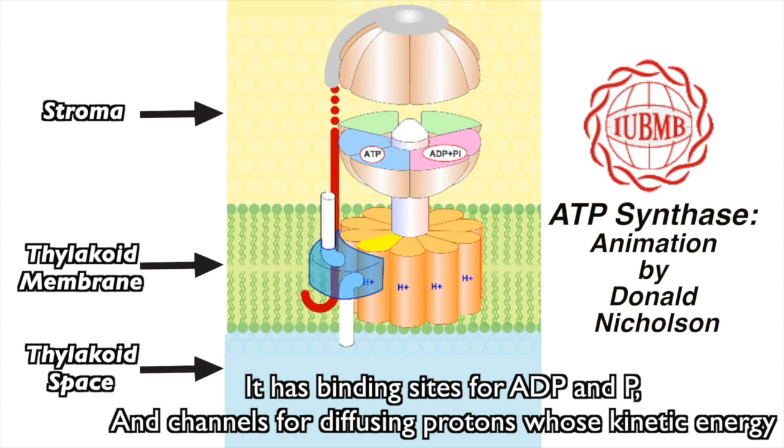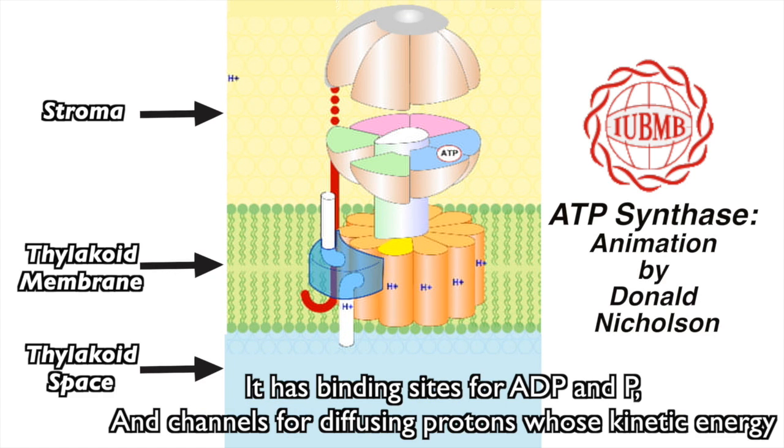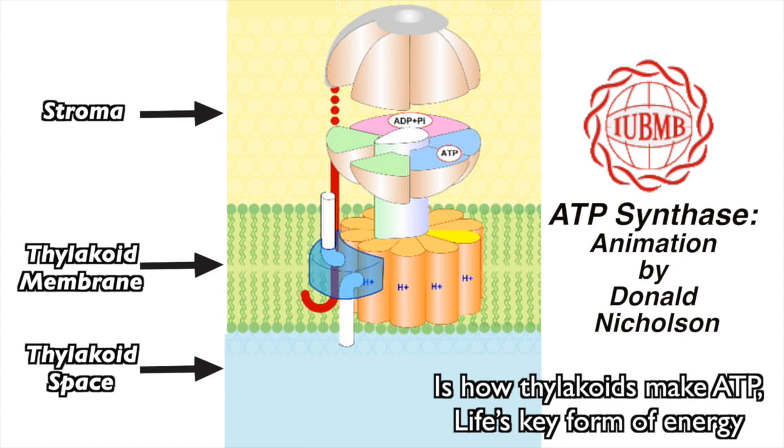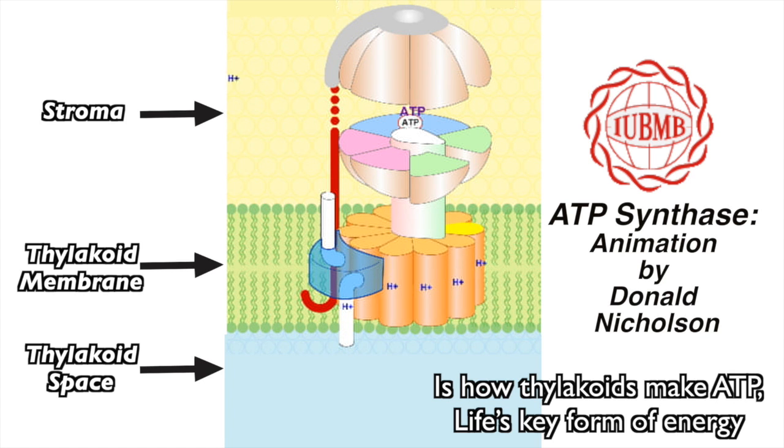It has binding sites for ADP and P, and channels for diffusing protons whose kinetic energy changes the binding site's conformation. Binding ADP with P, which for your information is how thylakoids make ATP, life's key form of energy.